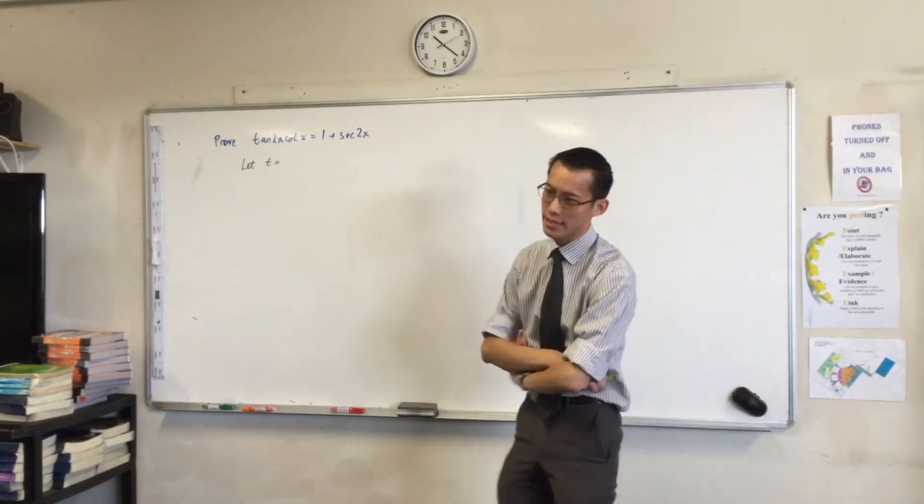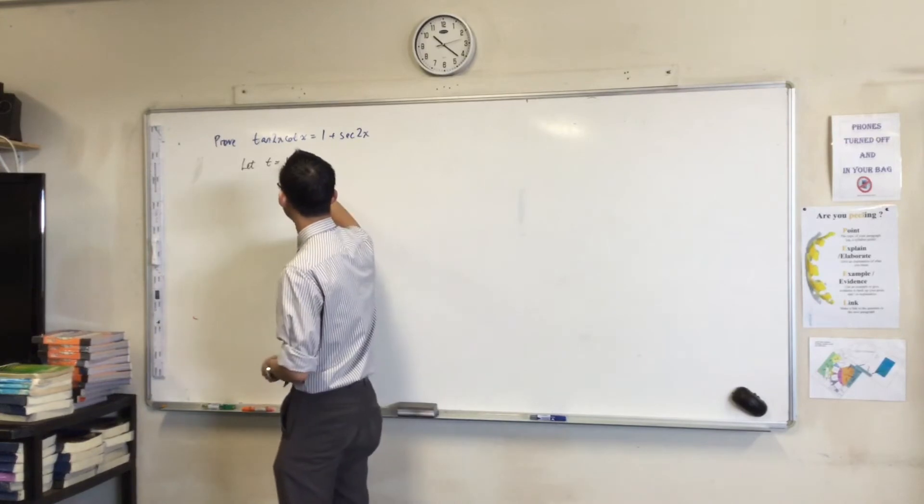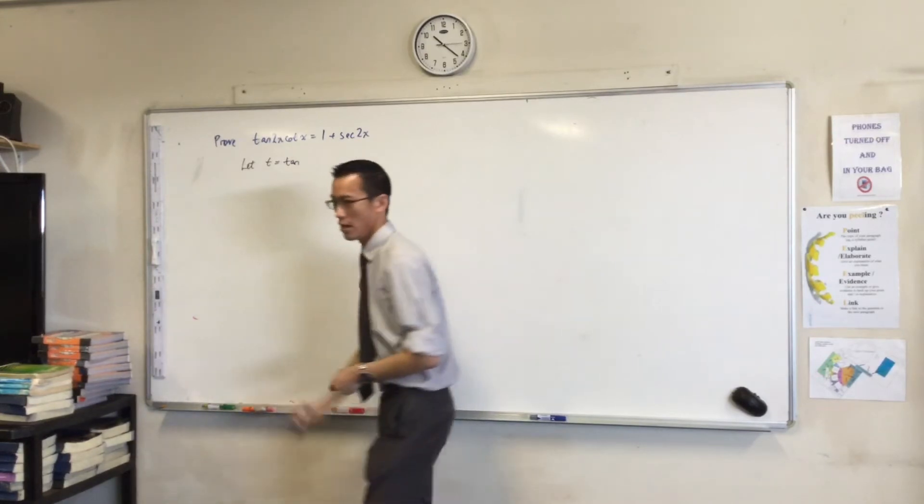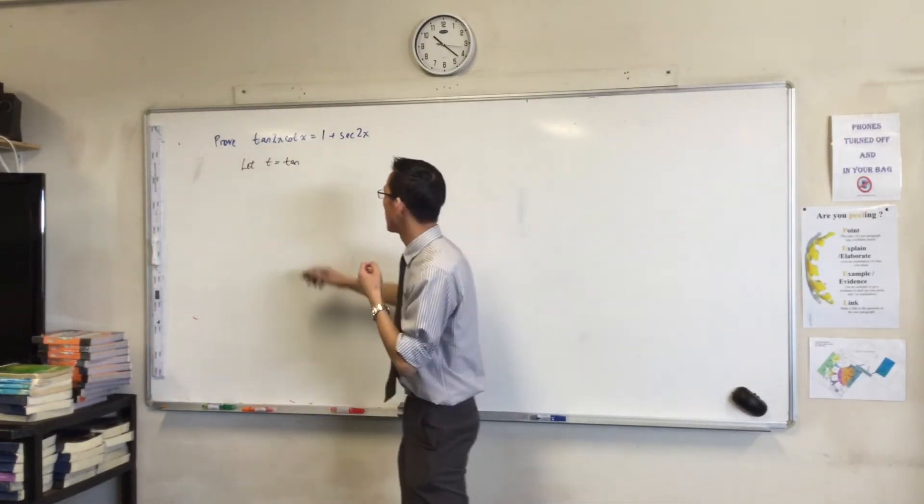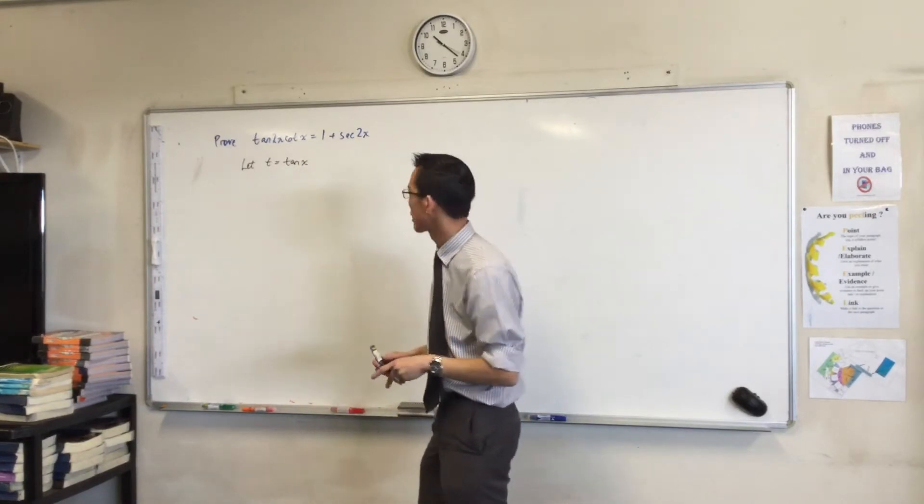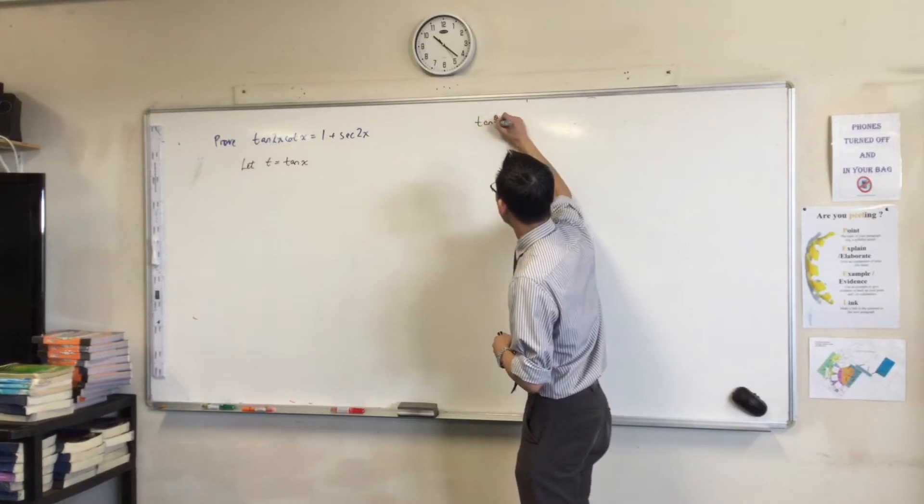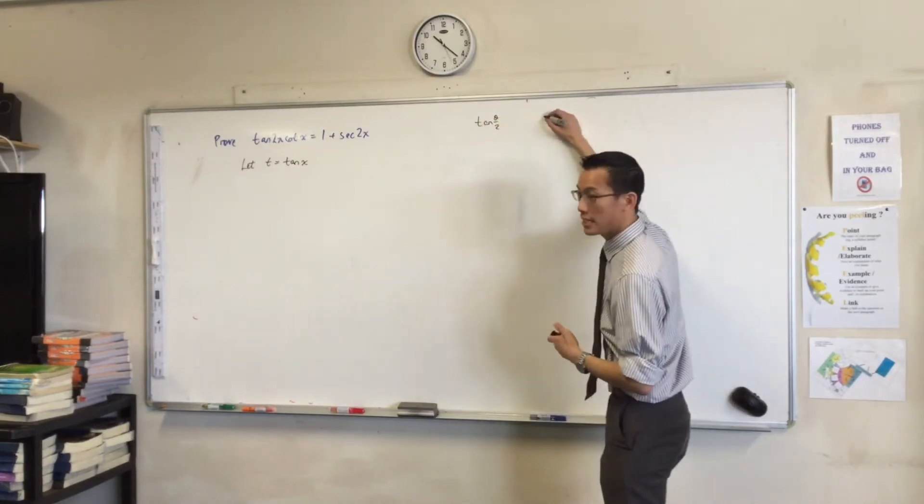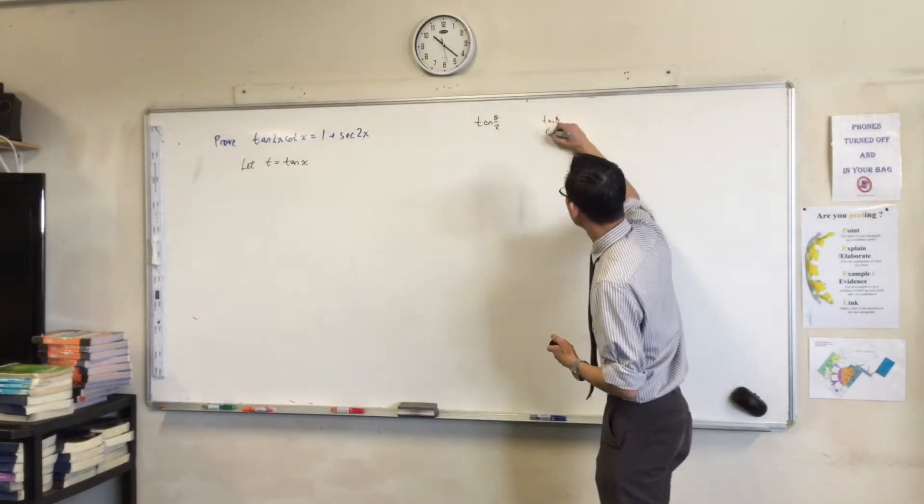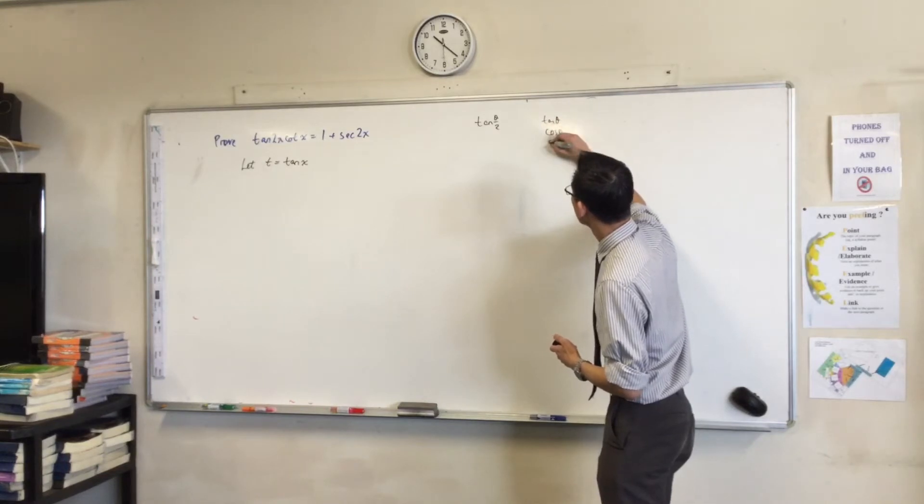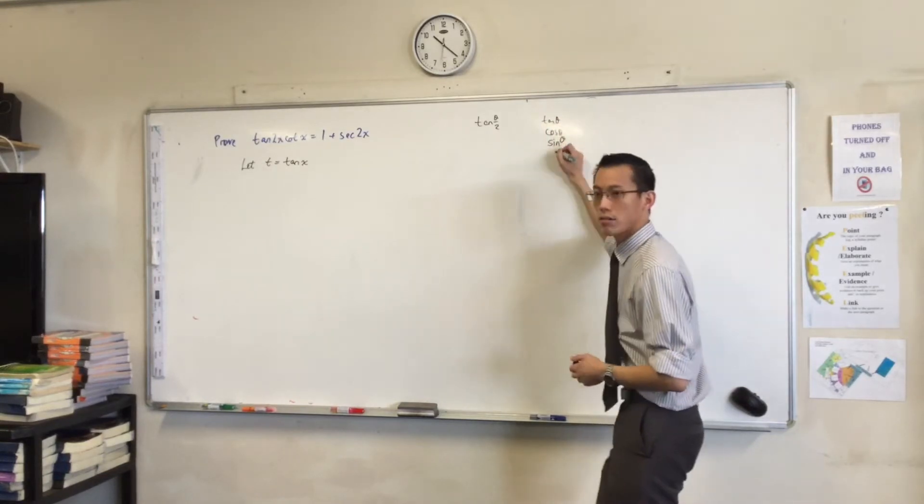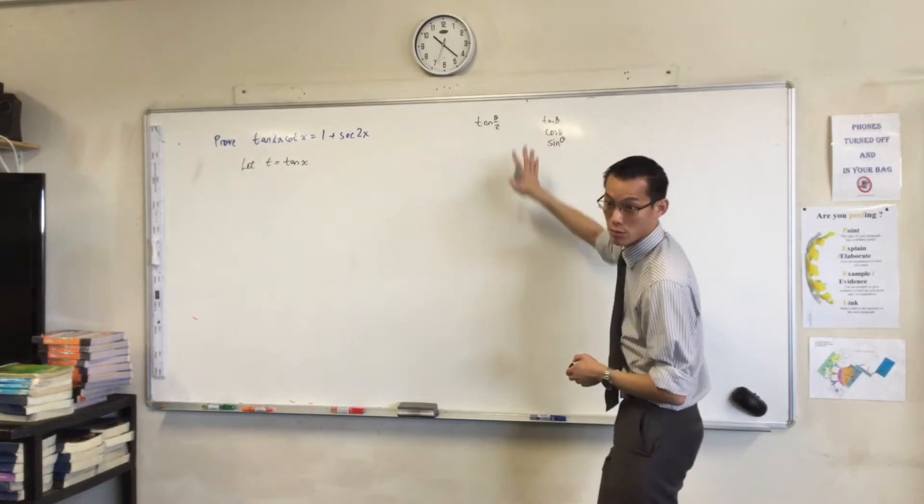Secondly, I'm not going to make it tan x on 2. I'm actually just going to say tan x. Here is why. If I've got tan theta on 2, then I'm going to be dealing in tan theta, cos theta, sine theta. This is the way we normally use t-results.